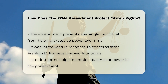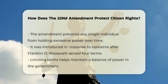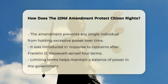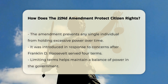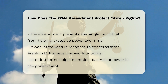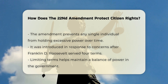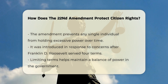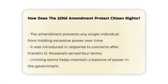Preventing executive overreach. This limitation prevents any single individual from accumulating too much power and influence over an extended period, which was a concern after President Franklin D. Roosevelt served four terms. By limiting terms, the amendment helps maintain a balance of power and prevents the potential for an elective monarchy.